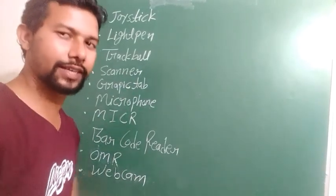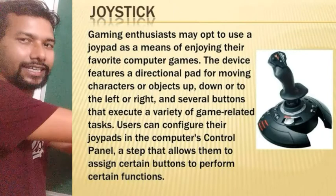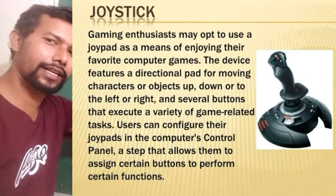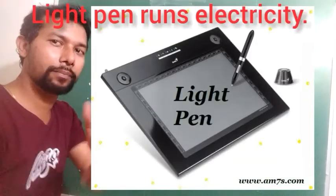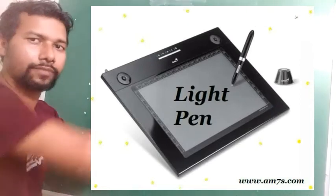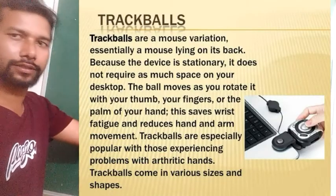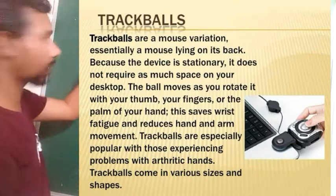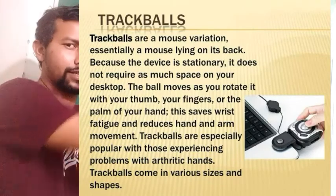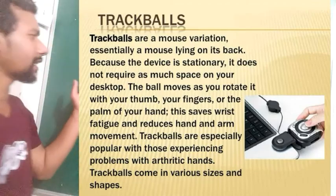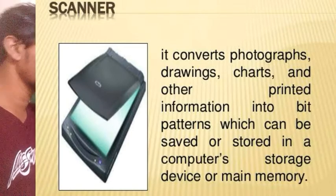Now let's discuss other input devices. Joystick is a gaming device that looks like a car gear; it moves left, right, up, and front and back. Light pen is like a simple pen but writes on a digital surface. Trackball performs similar to a joystick but appears flat with a ball in the middle that you can roll in any direction. Scanner is used to convert physical data to digital data.